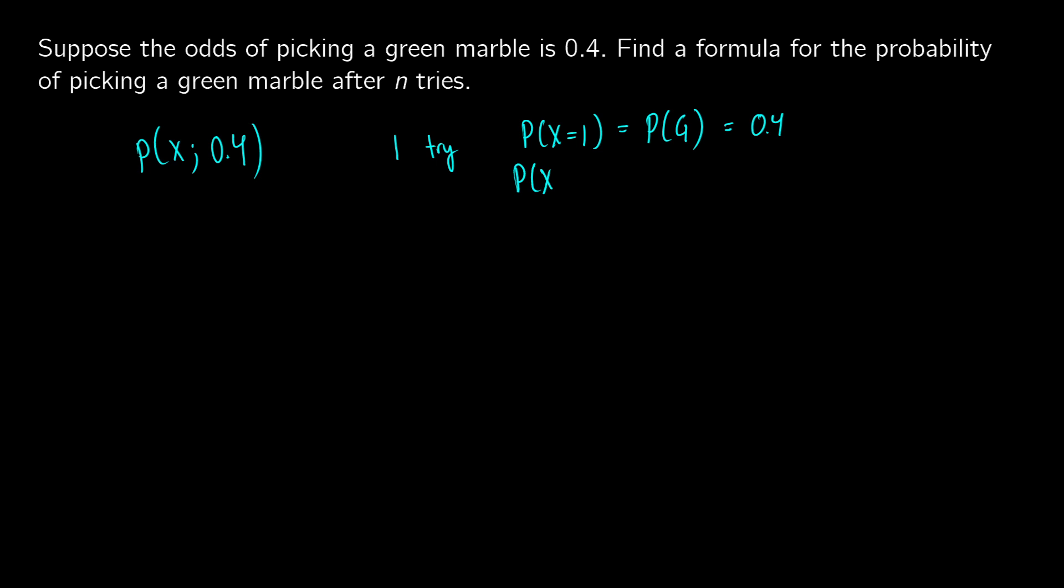What if we have x equals 2? So we're going to have two tries. This would be the probability of something else, and then we get a green marble. This is going to be the probability of something else times the probability of green. What is the probability of getting something else? It's going to be 1 minus the probability of getting green, so this would be 0.6 times 0.4.